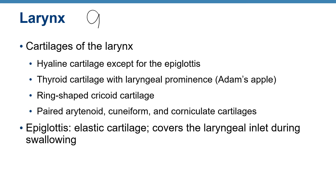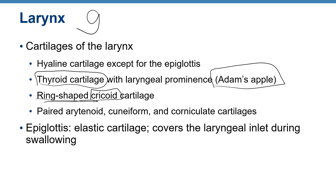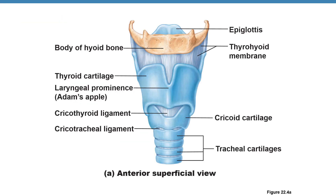The larynx has nine cartilages total. The largest is the thyroid cartilage — what we call the Adam's apple. There is also the ring-shaped cricoid cartilage. Both the thyroid and cricoid are hyaline cartilage. The epiglottis is elastic cartilage and covers the laryngeal inlet during swallowing. In the diagram you can see the thyroid cartilage, cricoid cartilage, tracheal cartilages, and epiglottis.